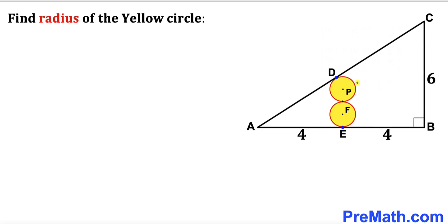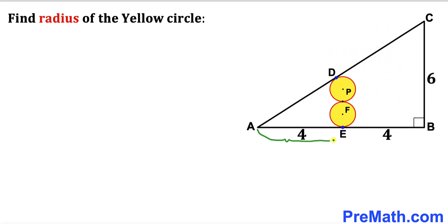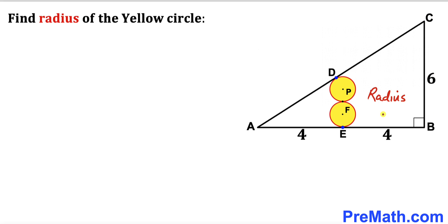Welcome to PreMath. In this video we have two identical circles fully inscribed in a right triangle ABC, as you can see in this diagram. These circles are tangent to each other, and D and E are the points of tangency. P and F are their centers. Segment AE is four units, segment EB is four units, and side length BC is six units. Our task is to calculate the radius of these yellow circles.